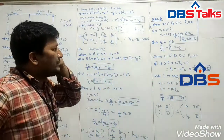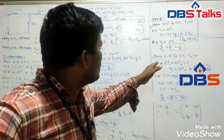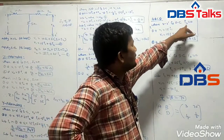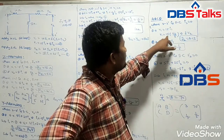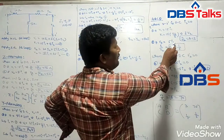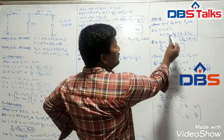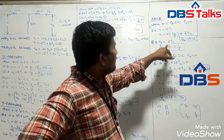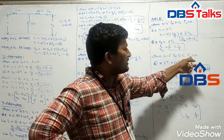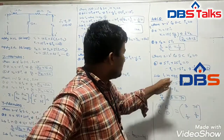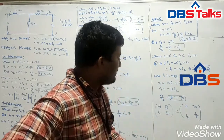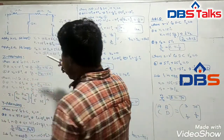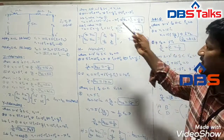For ABCD parameters: open-circuit output (I2 = 0): V1 = 15I1, V2 = 5I1, so A = V1/V2 = 3 and C = I1/V2 = 1/5. Short-circuit output (V2 = 0): solving gives B = 7 and D = 1/5. ABCD matrix = [3, 7; 1/5, 1/5]. These are all the Z, Y, H, and ABCD parameters for the given electrical network.